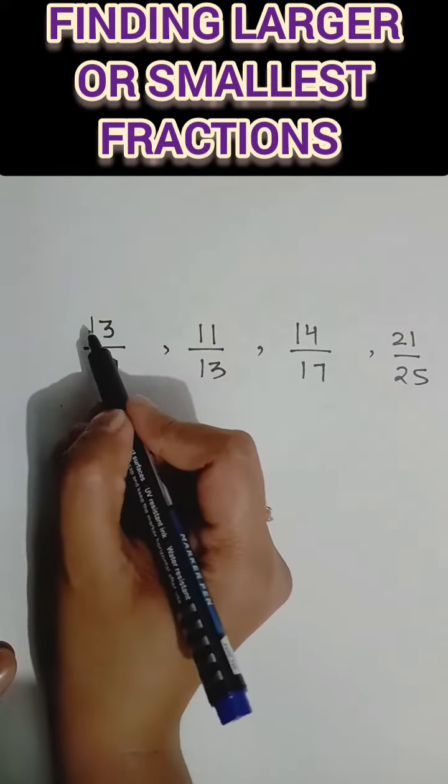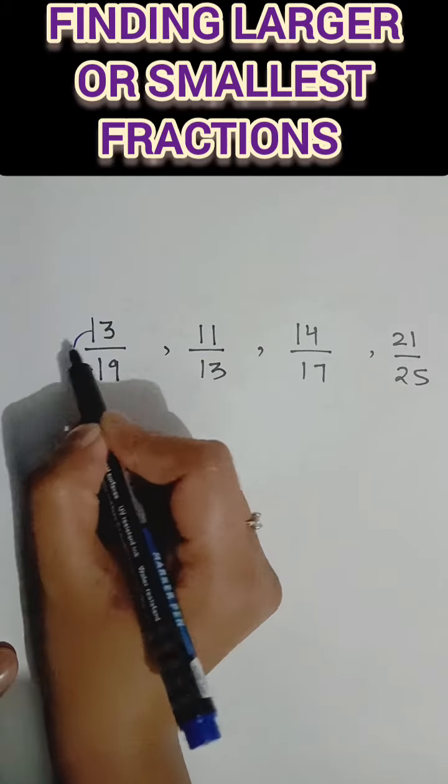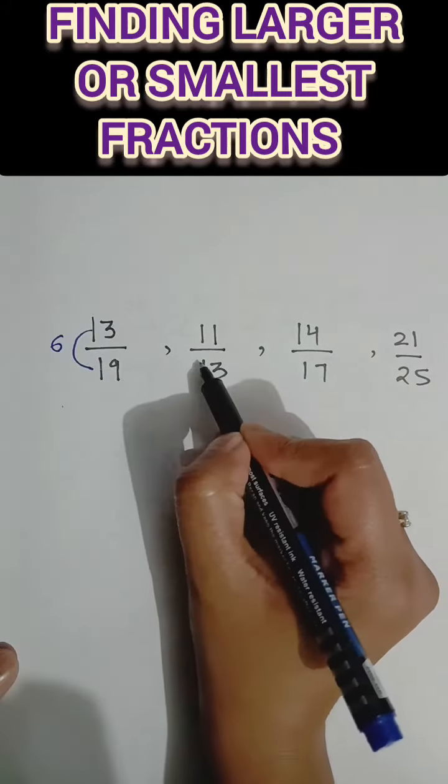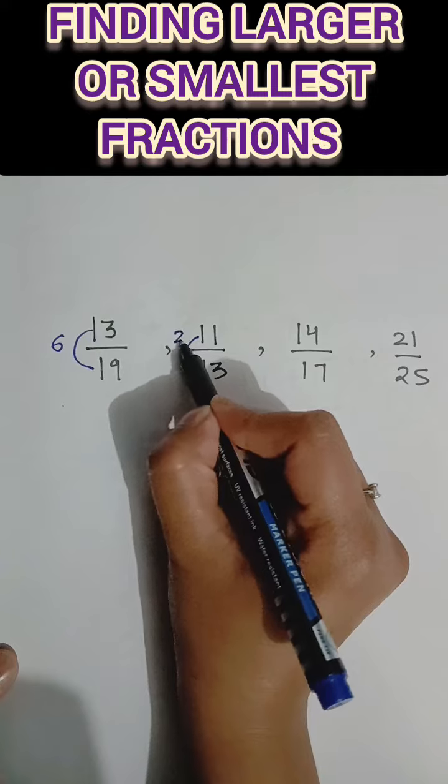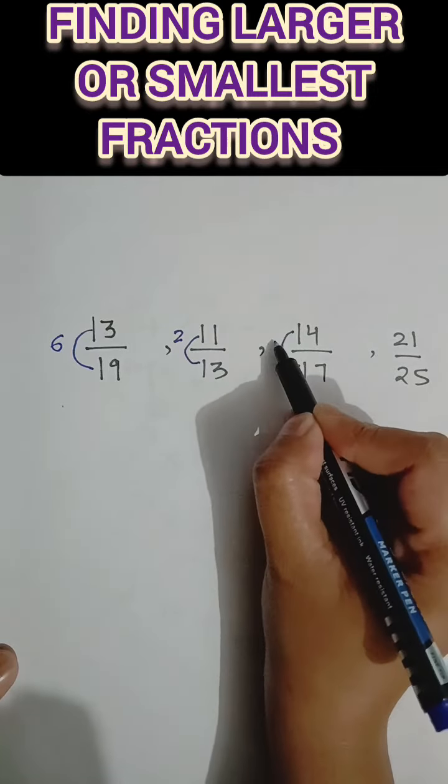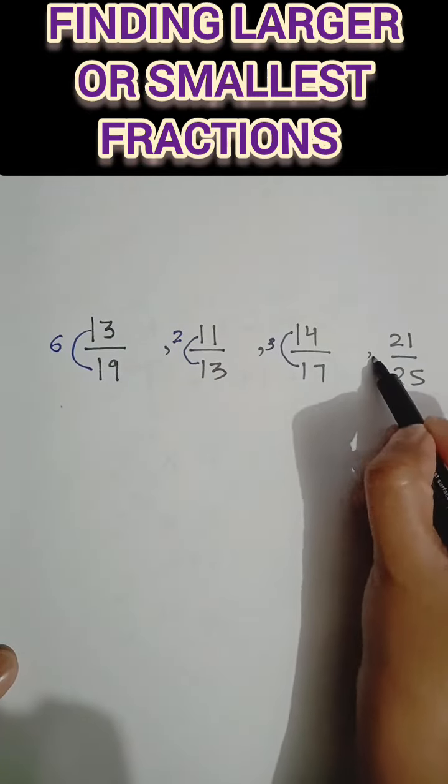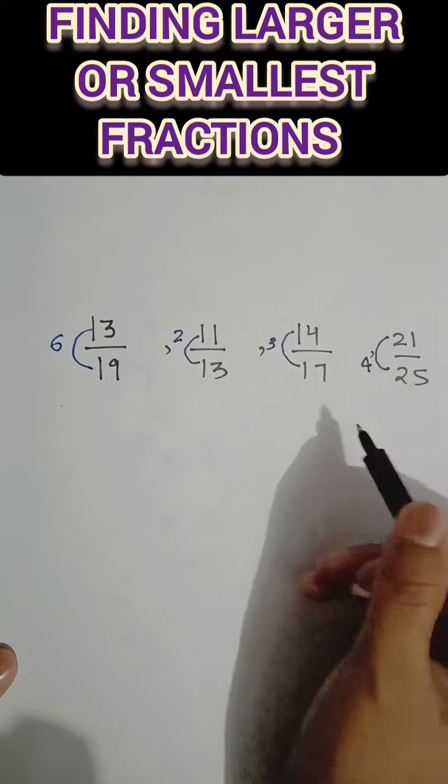First of all, you have to see the difference between the numbers. How much difference is between 19 and 13? 6 is the difference. 13 and 11, there is a difference of 2. 17 and 14, there is a difference of 3. 25 and 21, there is a difference of 4.